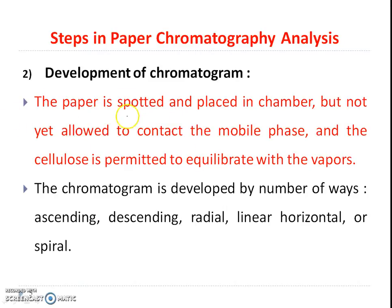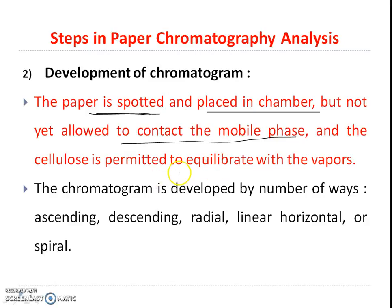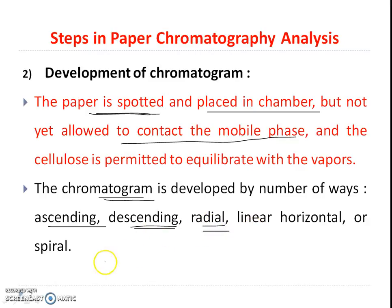The sample is spotted onto the paper and placed in the chamber, but the paper is not allowed to contact the mobile phase directly — instead, the paper is allowed to saturate with the mobile phase. There are different ways by which the chromatogram can be run: ascending in the upward direction, descending in the downward direction, and radial or linear horizontal spiral.